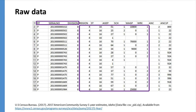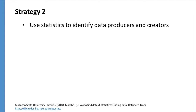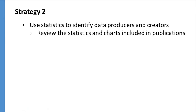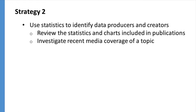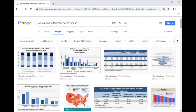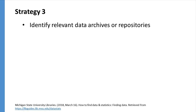This type of information is usually available in the code book or data dictionary. Getting back to strategy 2, a few ways that you can use statistics to identify data producers include reviewing the statistics and charts included in publications and using the associated citations to identify the creators, investigating recent media coverage of a topic and determining where they found this information, or conducting a Google image search for your topic to identify potentially relevant visualizations on the web.